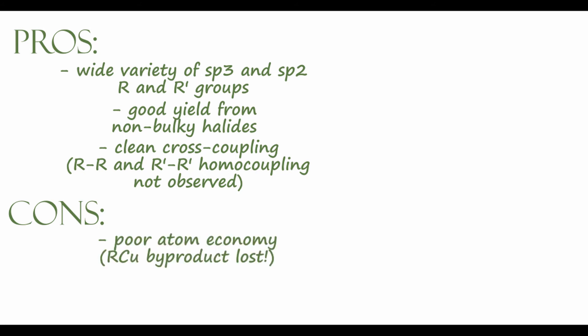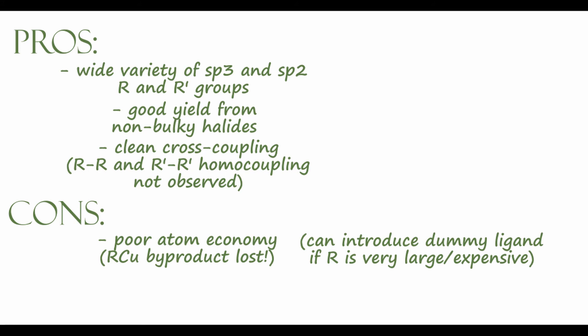One of the biggest cons is poor atom economy. We get two lithium salt species from the reaction, plus another equivalent of lithium salt if you're preparing the alkyl lithium reagent. The biggest issue is the organocuprate byproduct — the RCu species — especially if that R group is very large or expensive to make; you don't want to waste half of your lithium organocuprate just to perform the coupling. There are ways to make a mixed Gilman reagent with a dummy ligand to make it cheaper, but in this basic version, we do get a lot of byproducts. Another challenge is that Gilman reagents are incompatible with carbonyl functions, so if carbonyl groups are present in your alkyl halide, you'll need to use a different metal to perform the coupling.